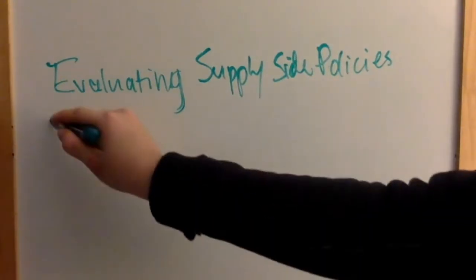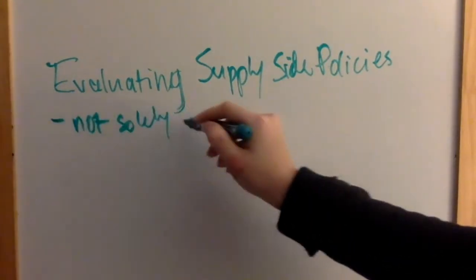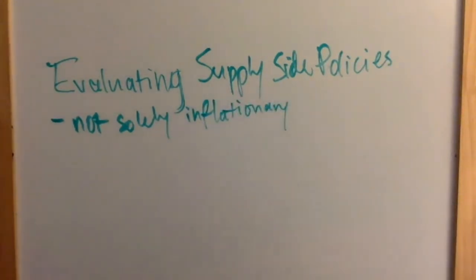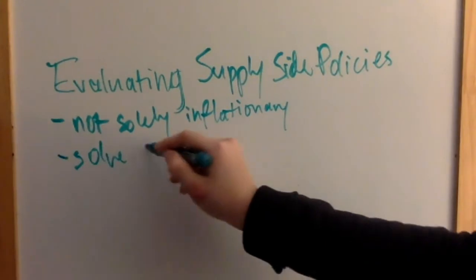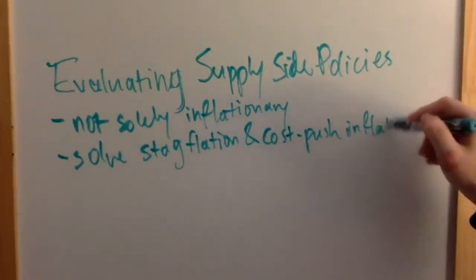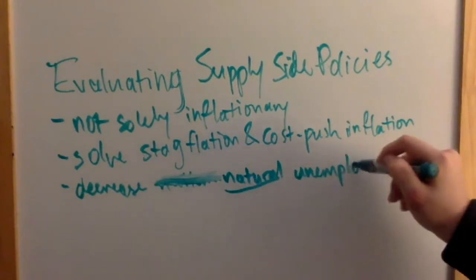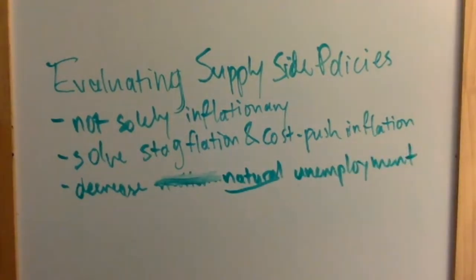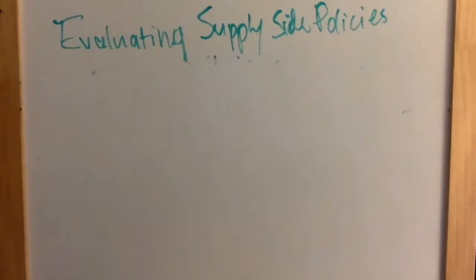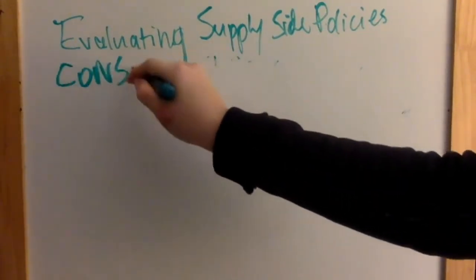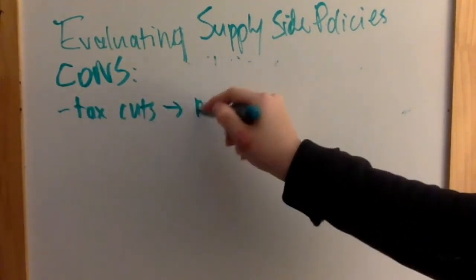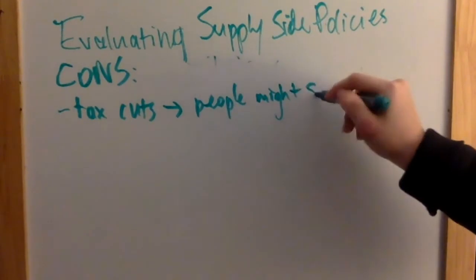Now let's jump to evaluation. Unlike demand-side policies, supply-side policies don't need to worry about being solely inflationary in the long run, and are the right response for stagflation. They also solve cost-push inflation and can decrease the natural rate of unemployment. A lot of supply-side policies will increase the long-run aggregate supply, which means they will increase the potential output of the economy — definitely a plus. However, we also have to take into consideration that they might not work. If we decrease income tax or corporate tax, people might choose to save the money or still choose not to work because they prefer leisure.